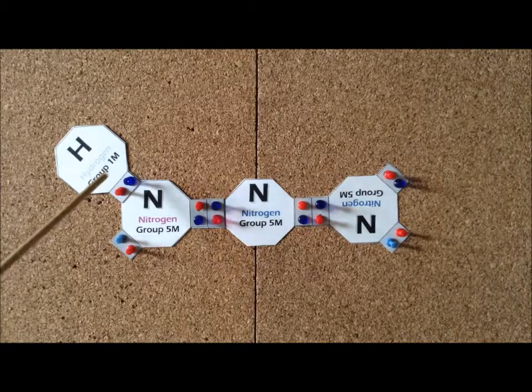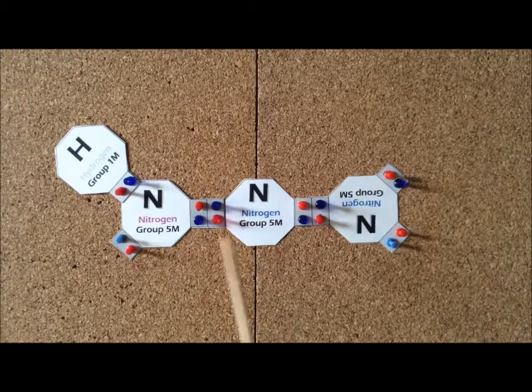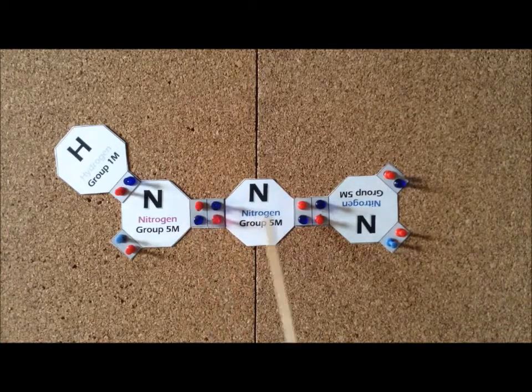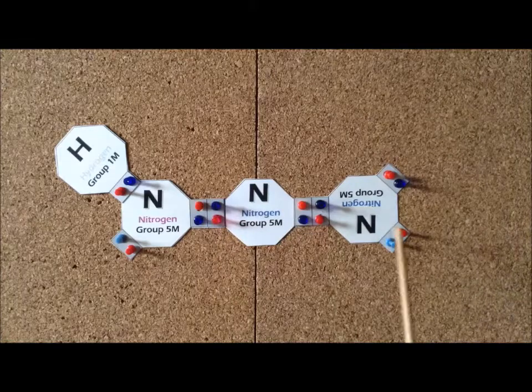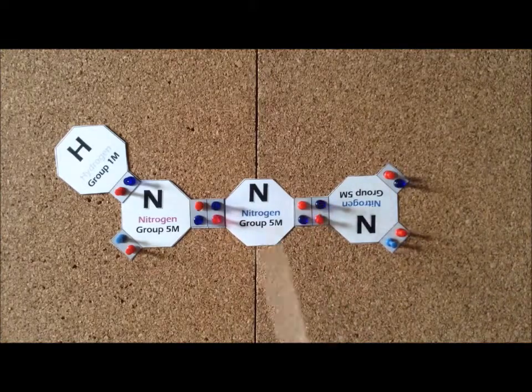So we notice that this nitrogen here has 2, 4, 6, 8 electrons. The central nitrogen has 2, 4, 6, 8 electrons. And the nitrogen to the right has 2, 4, 6, 8 electrons.